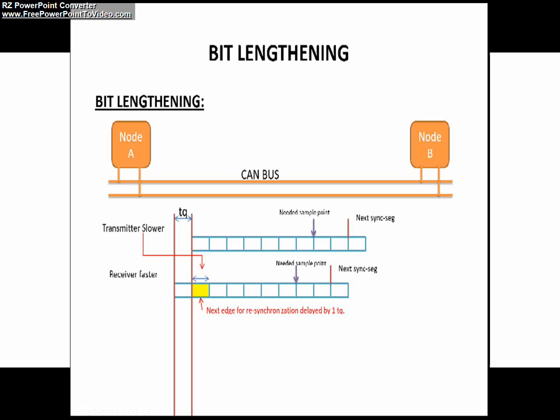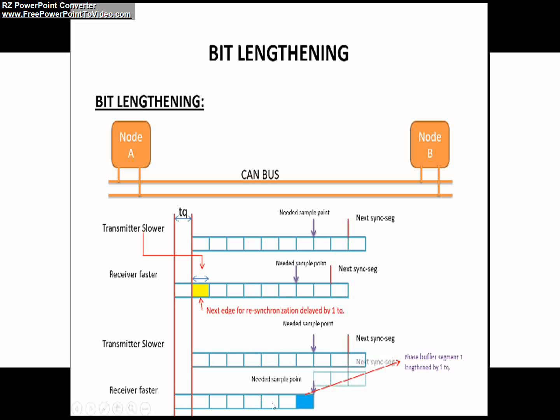As we already discussed in our previous videos, part 20 through 23, the receiver has to lengthen the phase buffer segment one in order to compensate this. You can see after lengthening the phase buffer segment one, the needed sample point is appropriate for the receiver so that the receiver can interpret the incoming bit appropriately.